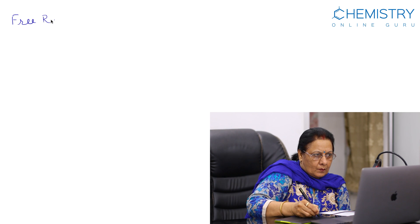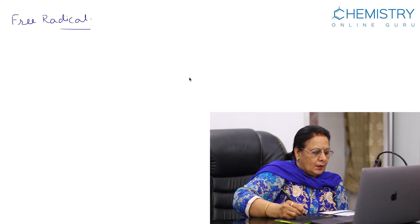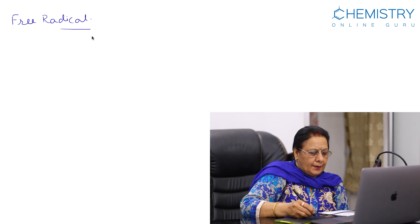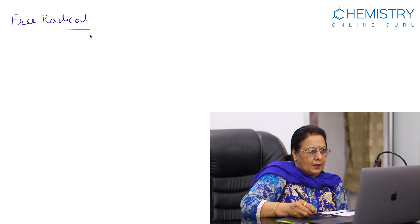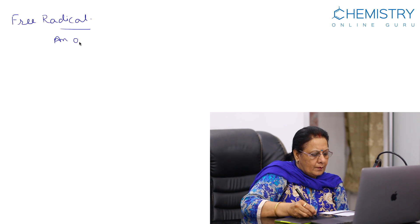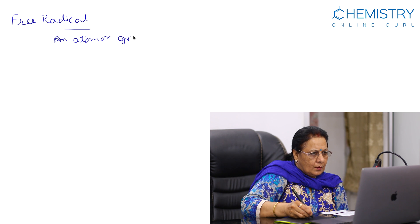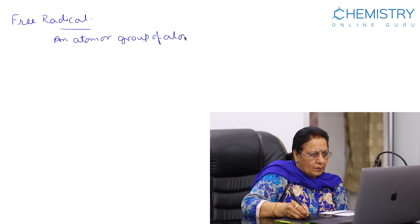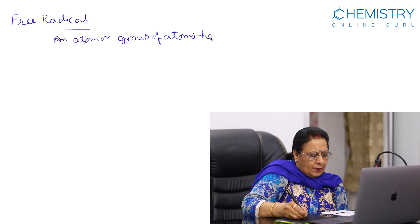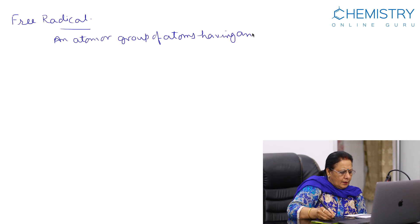Welcome to chemistryonline.guru. Today we will discuss about free radicals. Free radical is defined as an atom or group of atoms having an unpaired electron.